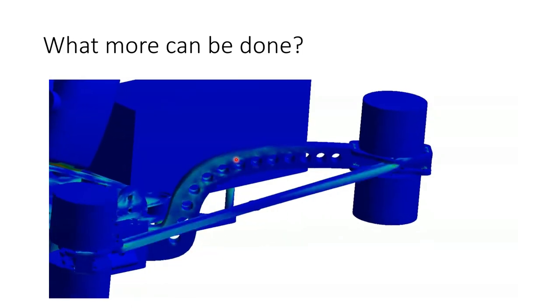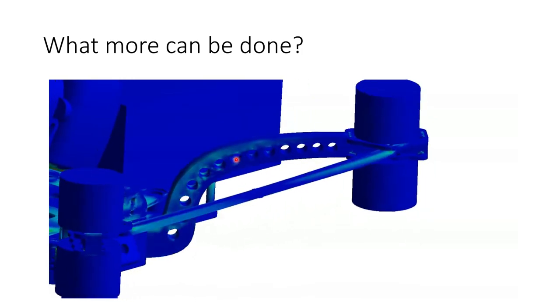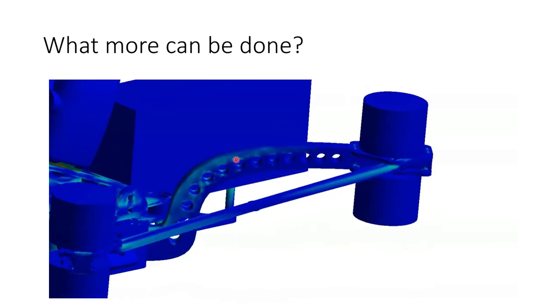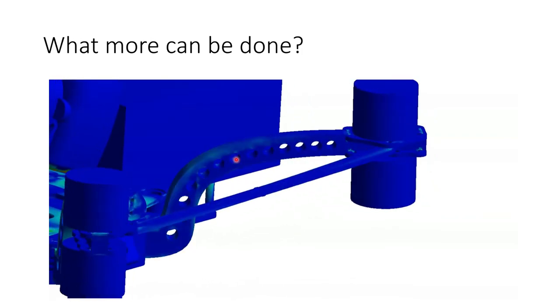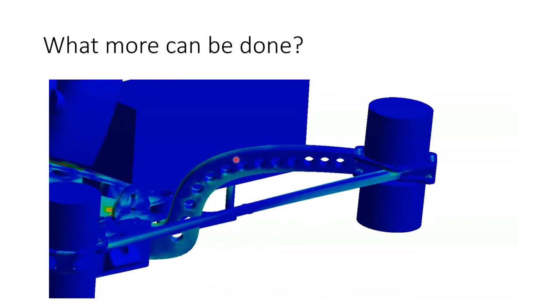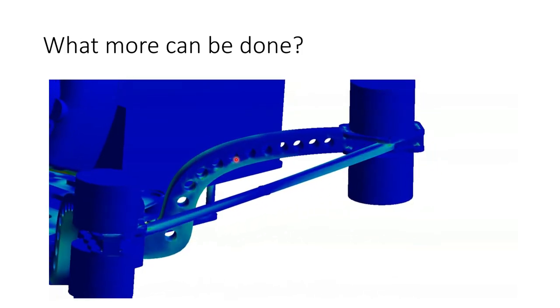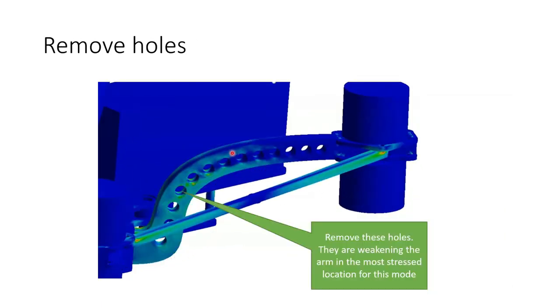But in this area where the arm is experiencing quite a lot of stress in this vibrational mode we could improve the performance the vibrational performance of the drone a lot by removing the holes that have been drilled here. It will make the drone slightly heavier but the added stiffness of the extra carbon fiber in that area will really help improve the vibration performance by increasing the frequency of the vibrational mode and therefore making it easier to filter and also reducing the amplitude of the vibrational mode for the same amount of vibrational energy that's input by the motors.